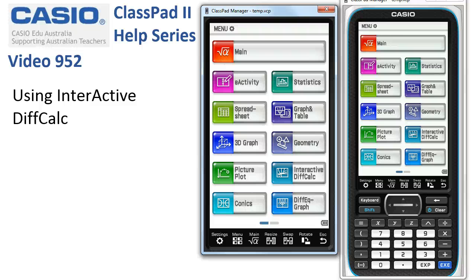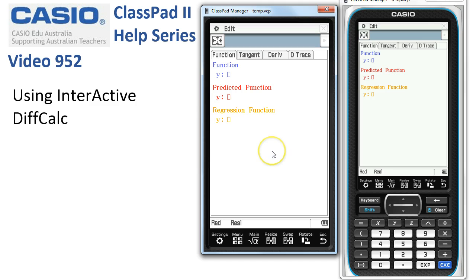Using interactive diff calc. This application only turned up in operating system version 2 and is used for exploring or investigating the relationship between a function, so let's enter one here as x squared, and its derivative.